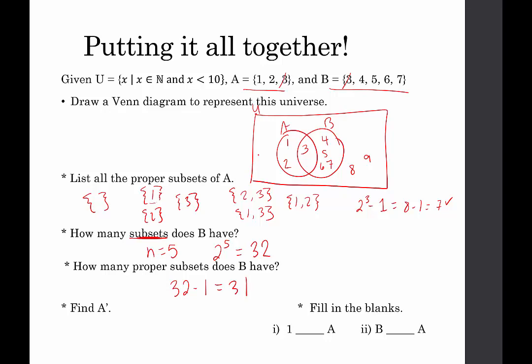Find the complement of A — that's everything in the universe not contained in set A. The complement of A would be {4, 5, 6, 7, 8, 9}. Then we fill in the blanks using correct notation: 1 is an element of A, using the element symbol. And B is a set being compared to A, a set, so the only comparison is subset or not a subset — B is not a subset of A. Thank you for stopping by.